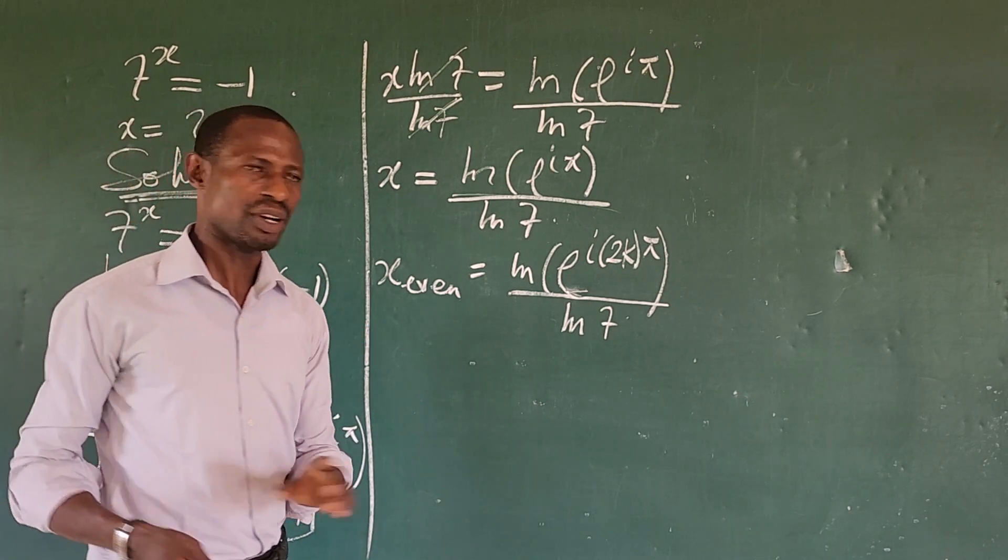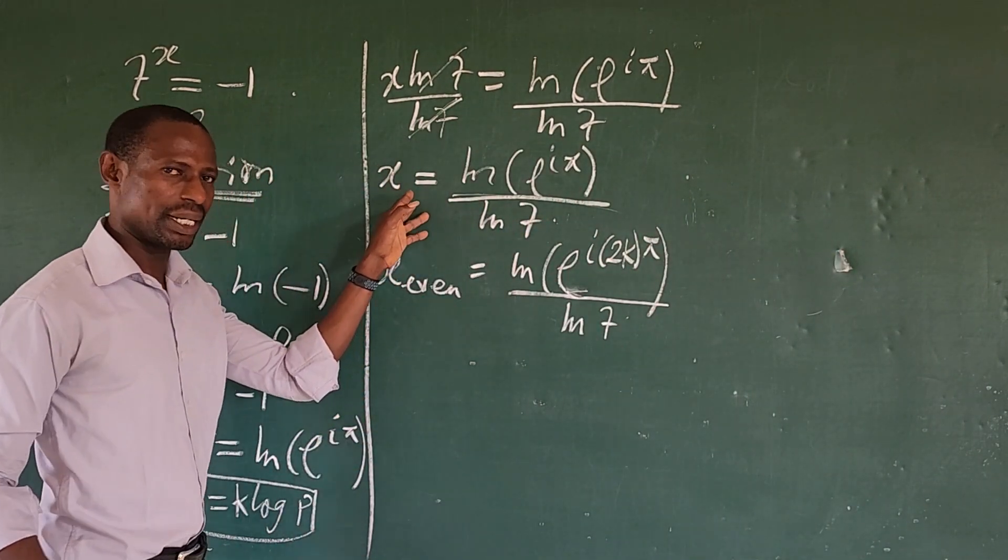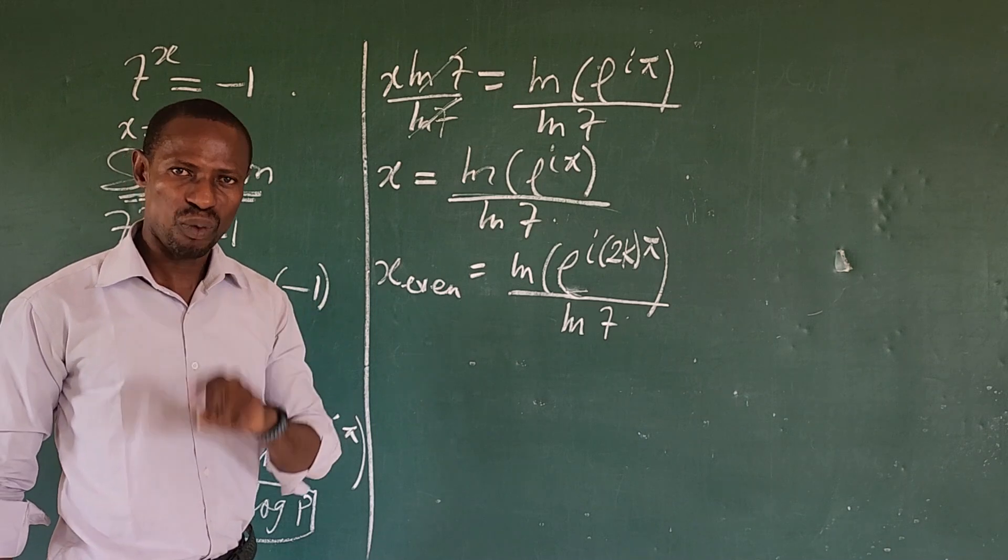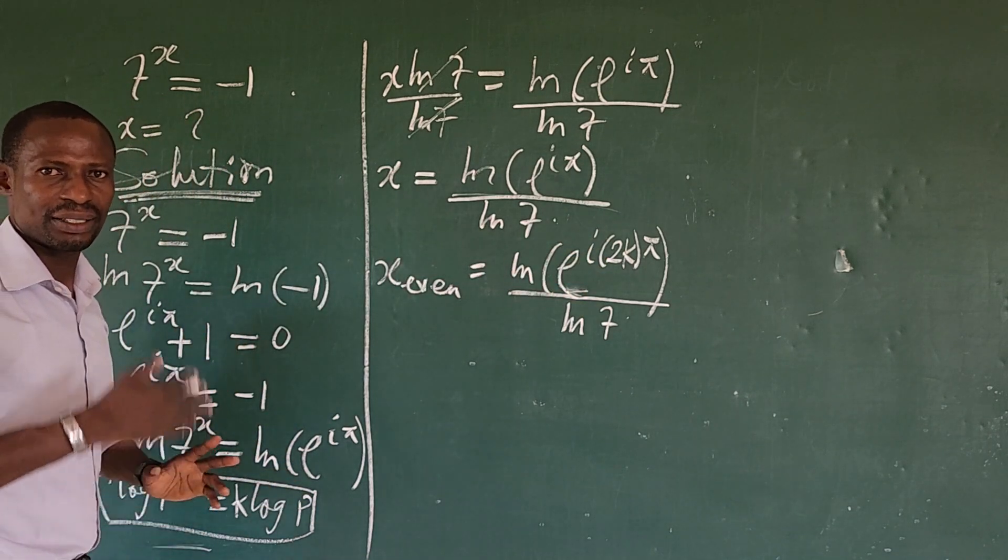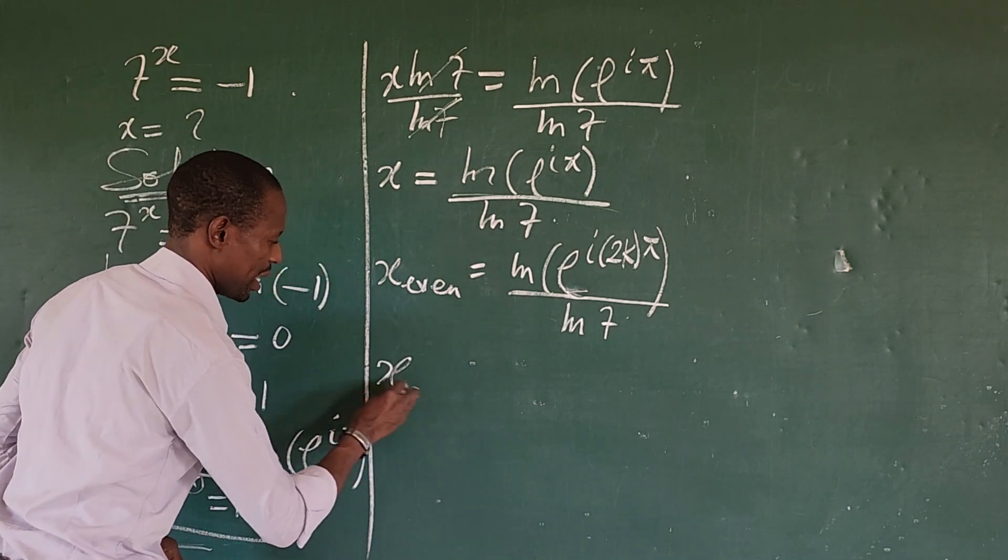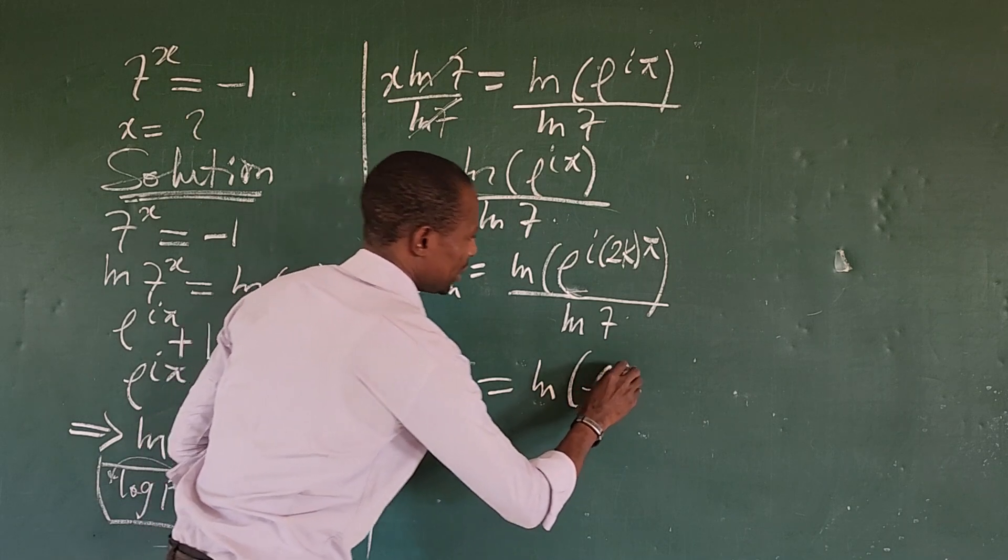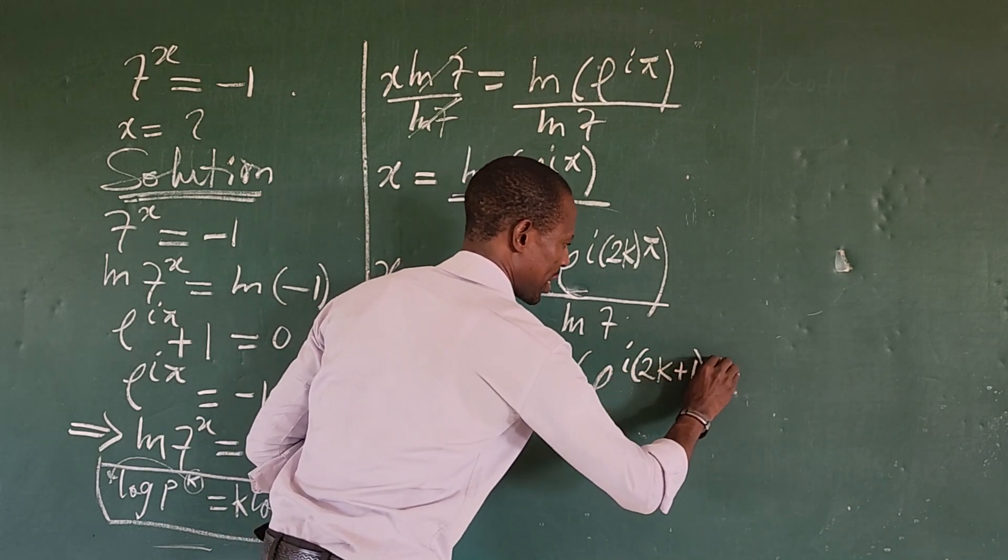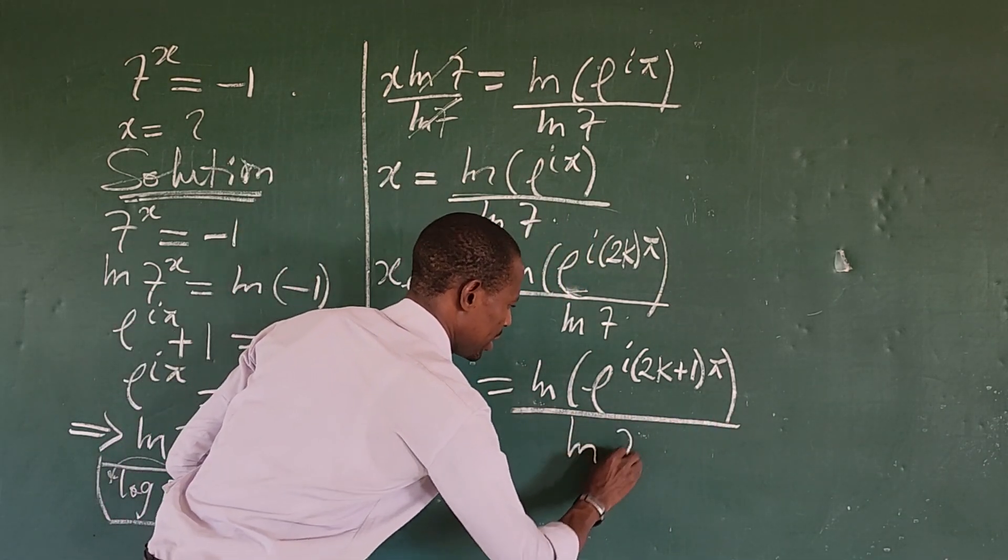Now we're looking for the odd value, but it is the odd value that we have to satisfy this expression here. So for the odd values of our x, we have to multiply the exponent by 2k plus 1. Like I said, here k is your series of constants ranging from 0, 1, 2, and so on. Alright, so we're going to look for our x, all values of x. We're going to have E to the power of i times (2k plus 1) pi, all over ln of 7.